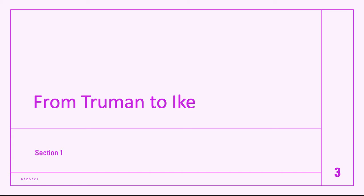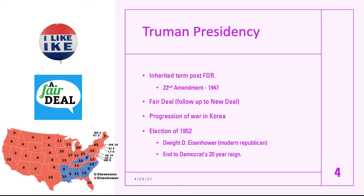To start, we have to go from Truman to Eisenhower. Let's start with Truman — Truman inherited the presidency after the great FDR. FDR was re-elected three times, served a total of three full terms, got into his fourth term, and that is when we saw him die — post World War II, right at the end — not even getting to see the end of the war that took up a large majority of his presidency.